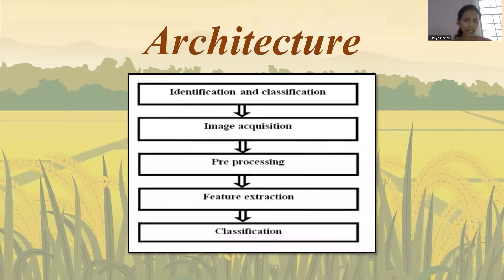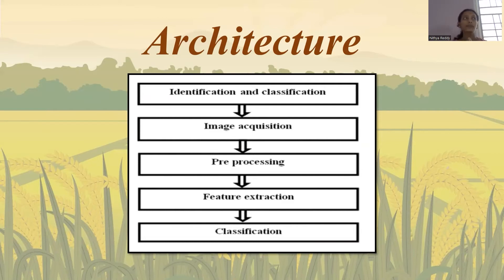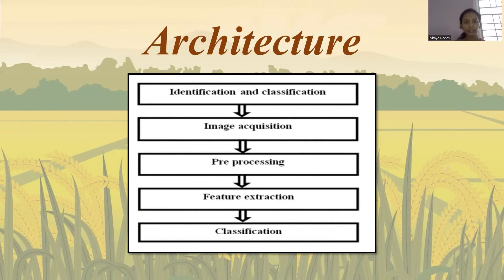The architecture is a block diagram or flowchart describing the step-by-step process of the whole project. First, we take the images and pre-process them — pre-processing involves converting the image from RGB to grayscale and reducing the image size. After pre-processing, we extract the important features, and the final step is classification, which identifies whether the input is a weed or a plant.